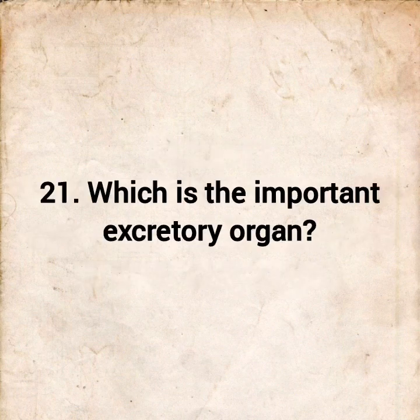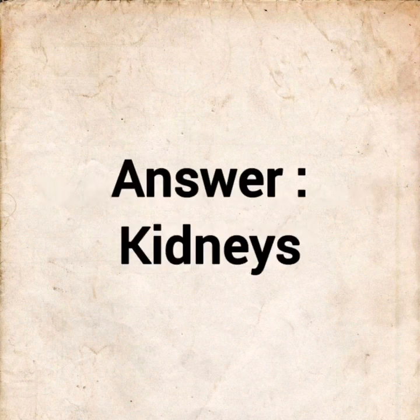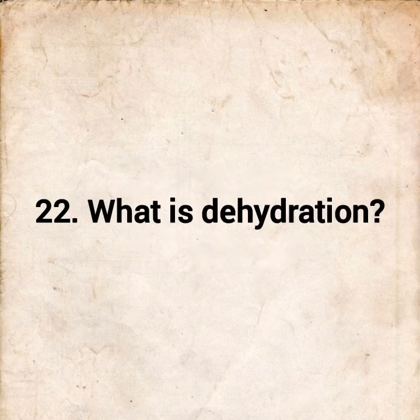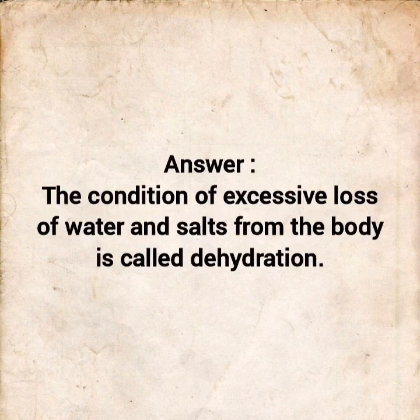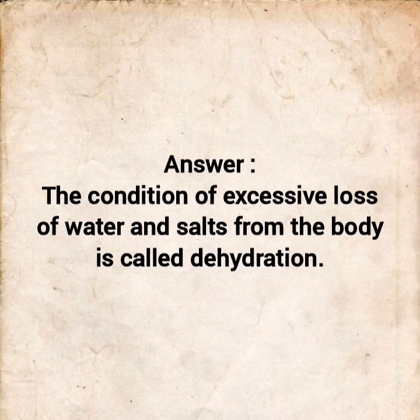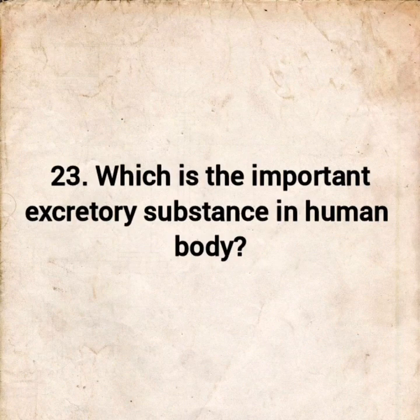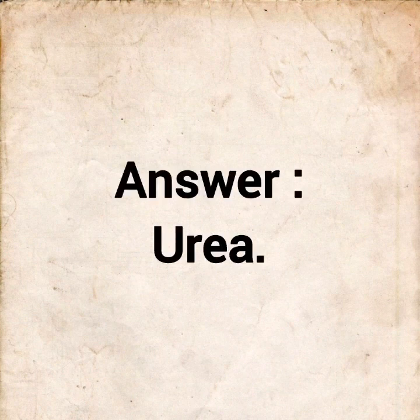Question 21: Which is the important excretory organ? Answer: Kidney. Question 22: What is dehydration? Answer: The condition of excessive loss of water and salt from the body is called dehydration. Question 23: Which is the important excretory substance in the human body? Answer: Urea.